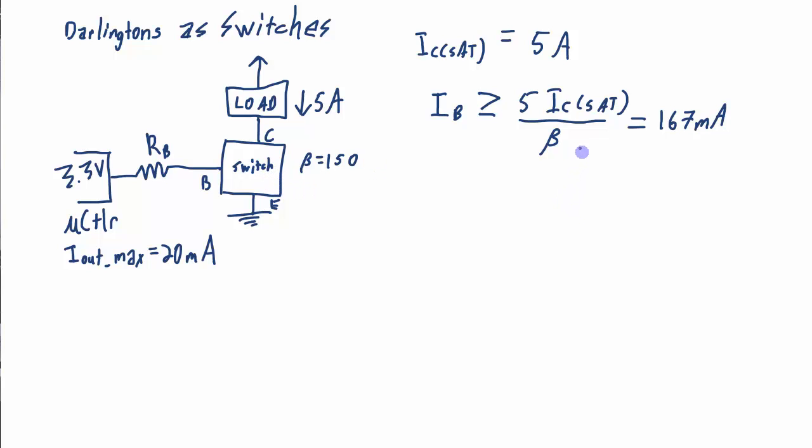So now let's look at what value of beta I need to make this inequality hold true. Well for my IB, I need that to be 20 milliamps. So that's the maximum my IB can be. And that needs to be greater than or equal to 25 amps, that's 5 times IC sat, divided by beta.